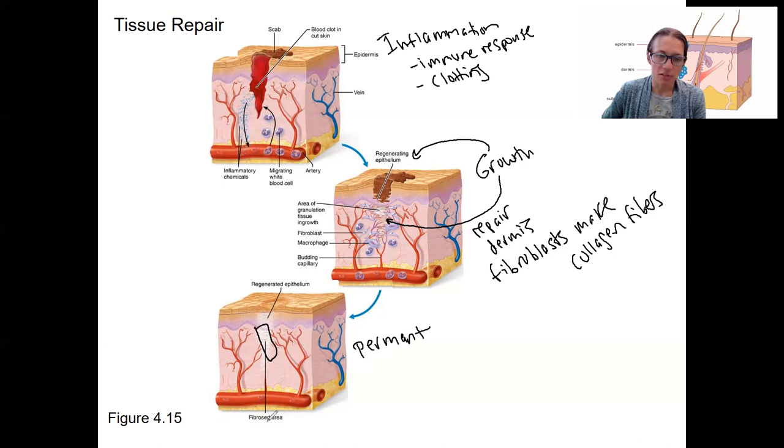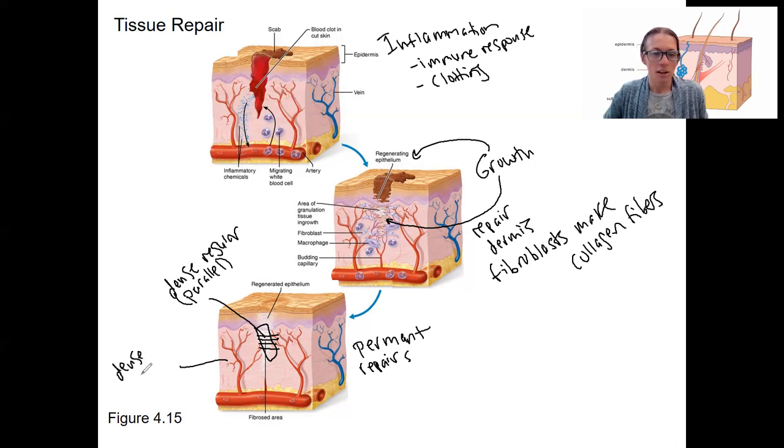So the epithelium has been regenerated and this dermal area has been fibrosed with fibers, collagen fibers. One thing about a scar is that the collagen fibers are more parallel and that's what actually makes the scar look different. This would be kind of more dense, regular. It's going to be parallel, which is what dense regular connective tissue is. And that's in contrast to skin. The dermis, the reticular dermis is dense irregular connective tissue. So when you have fibers added in a parallel fashion, you can see that that's a scar.